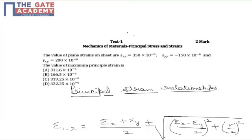In this question, the value of plane strains on a sheet are epsilon xx = 350 × 10^-6, epsilon yy = -150 × 10^-6, and gamma xy (shear strain) = 200 × 10^-6. We need to find the value of the maximum principal strain.